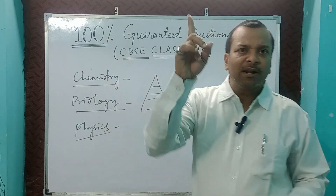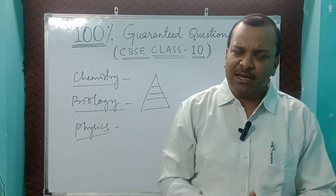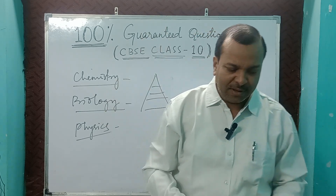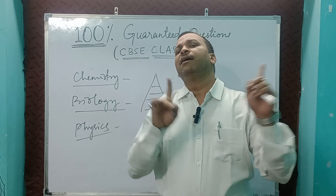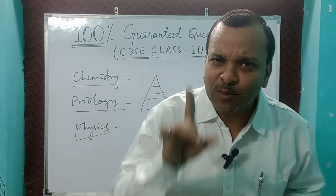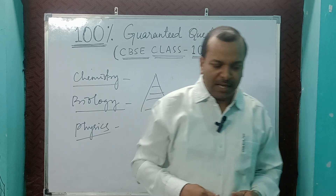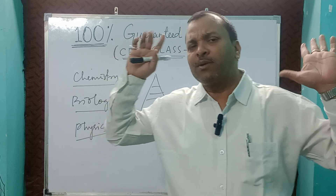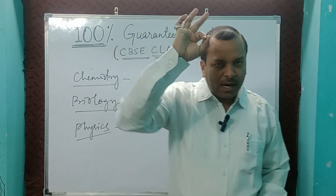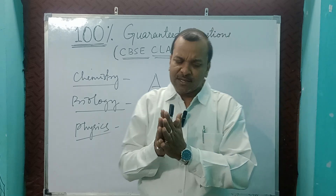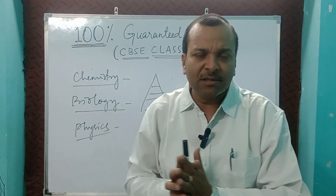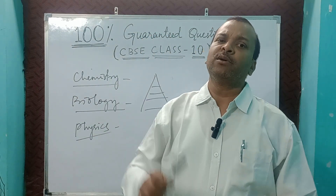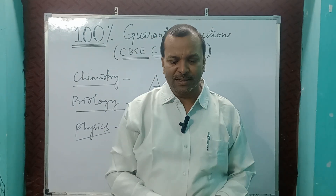From physics, concave mirror and convex mirror numericals — 110 percent you are going to get it. Refractive index, defects of vision: myopia and hypermetropia — one or two questions guaranteed. Through prism — one question guaranteed. Applications of atmospheric refraction and scattering of light — for example, twinkling of stars and why the sky looks blue — you are going to get one question from that.